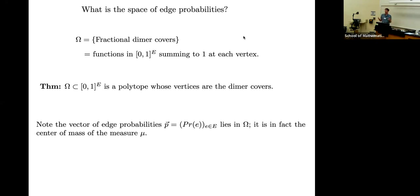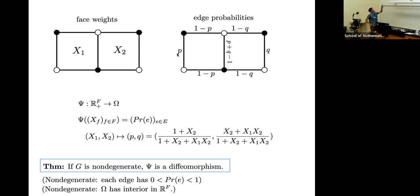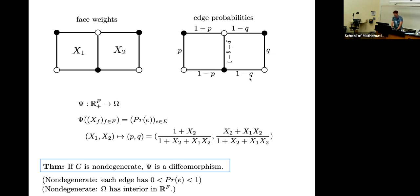What is the space of edge probabilities of a dimer model on a bipartite graph? If I know the edge probabilities of the leftmost edge P and the rightmost edge Q, then the other edge probabilities are all determined — because this vertex has to be in either the vertical edge or the horizontal edge, so those two probabilities have to add up to one. So if I know P, I know the complement is one minus P; if I know Q, this has to be one minus Q. The space of edge probabilities is the same dimension as the space of face weights.